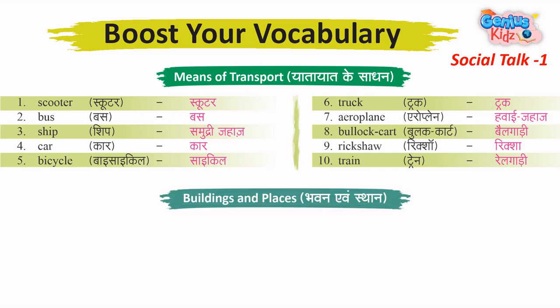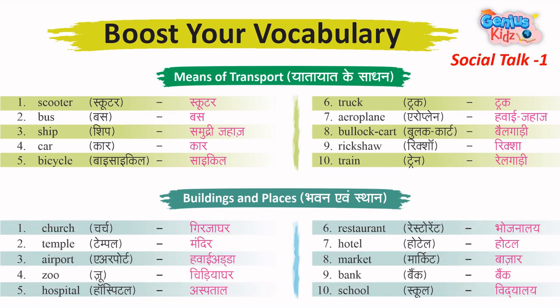Buildings and Places – Bhawan evam Sthaan. 1. Church – Girja Ghar. 2. Temple – Mandir. 3. Airport. 4. Zoo. 5. Hospital.